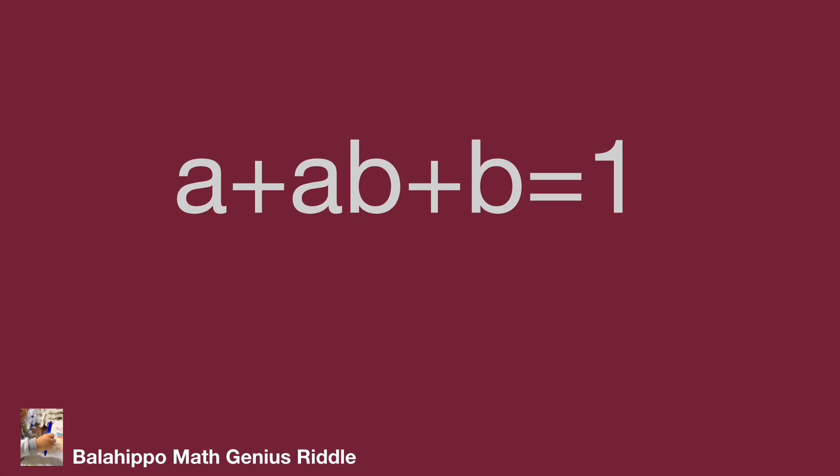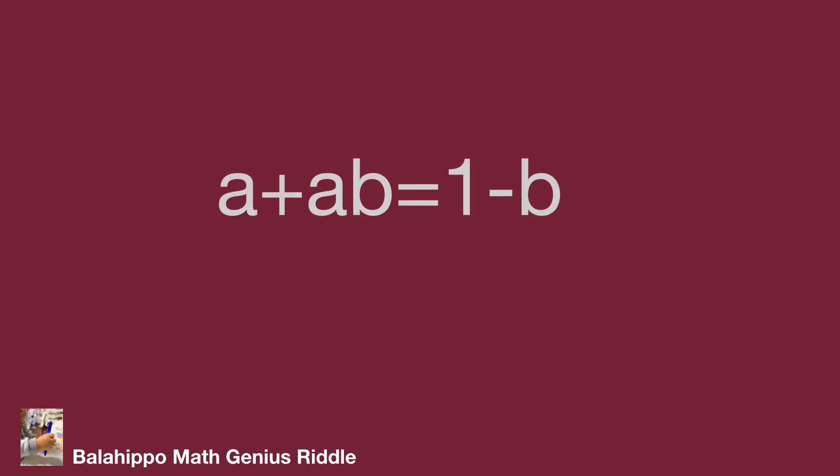I'm going to focus on the unknown a, and a is an integer. We find the terms a and ab that have the factor a. So move b to the right side and keep a plus ab with the factor a in the left side of the equation.